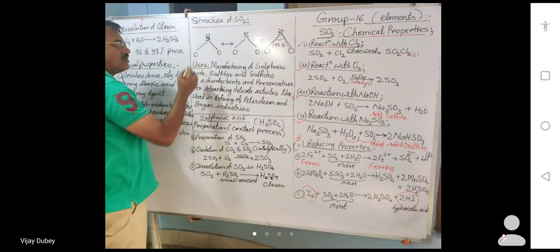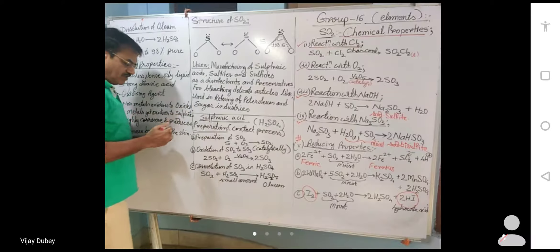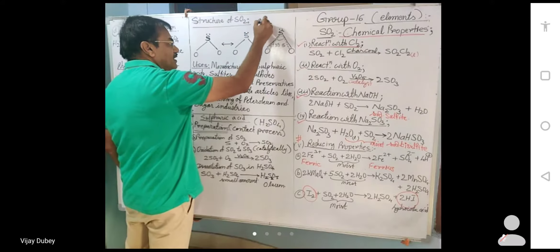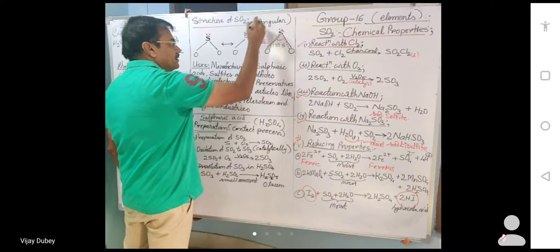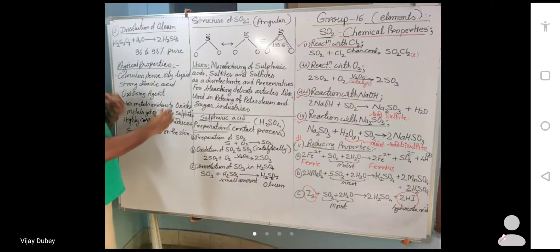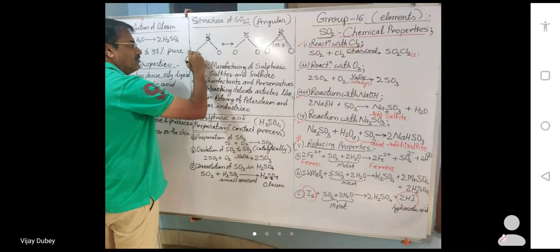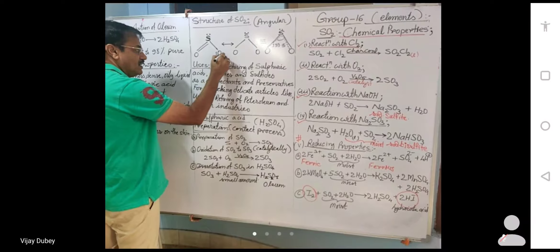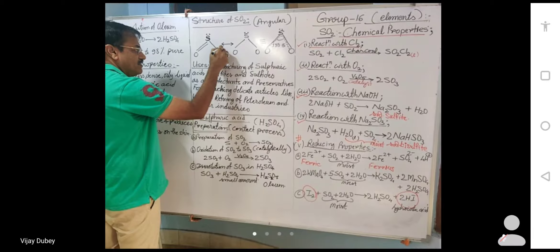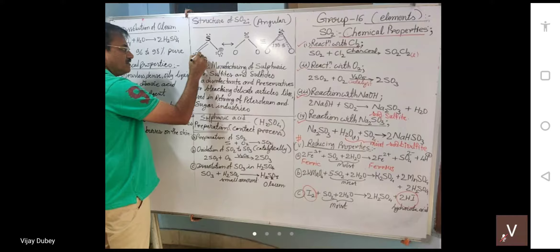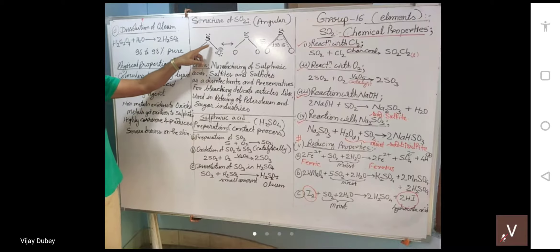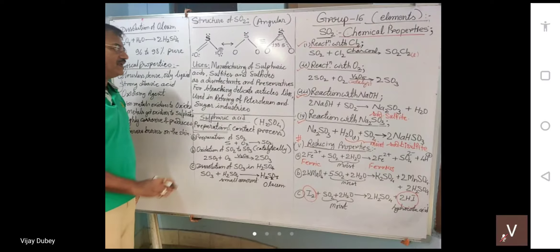Next is the structure of sulfur dioxide. SO2 has angular geometry, like water and ozone. One oxygen has a double bond with sulfur, while the other oxygen has a single bond. The doubly bonded oxygen has two lone pairs of electrons, whereas the singly bonded oxygen has three lone pairs.